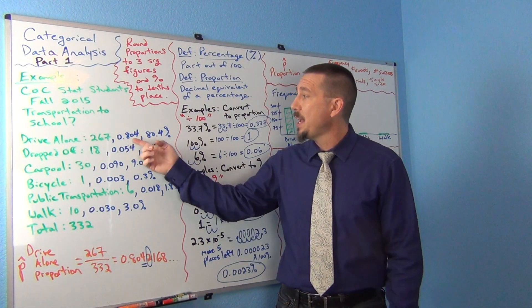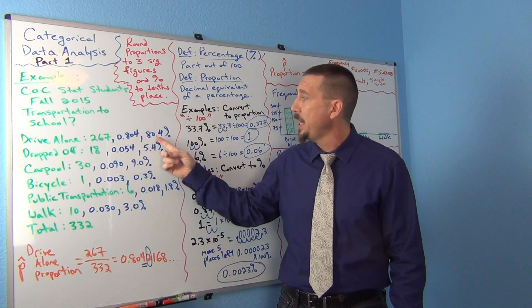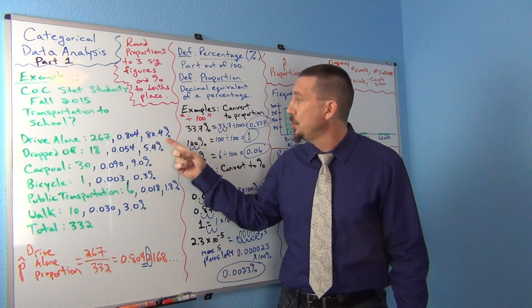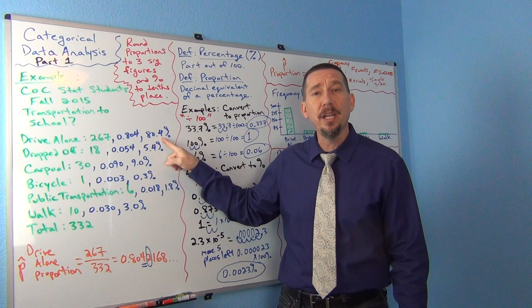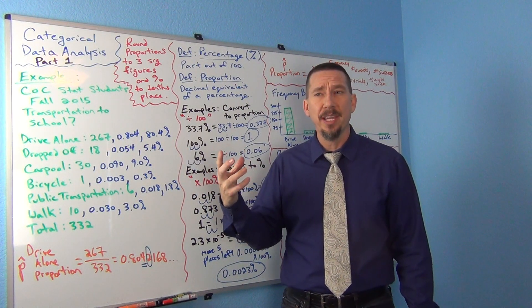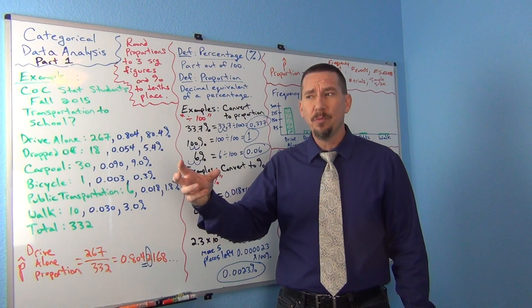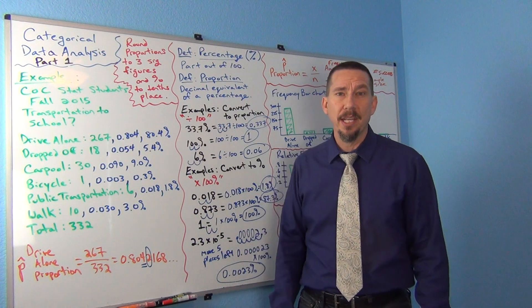Now again, if I multiply that by a hundred on my calculator or move the decimal two places to the right, that would give me 80.4%. If you notice, the percentage is rounded to the tenths place. One number to the right of the decimal. Sometimes you'll hear that in stat books. They'll say round the percentage, round to a tenth of a percent. That's a very common rounding rule for percentages.